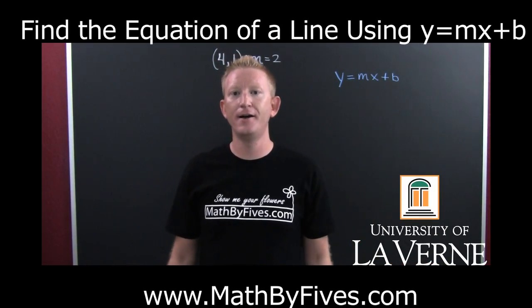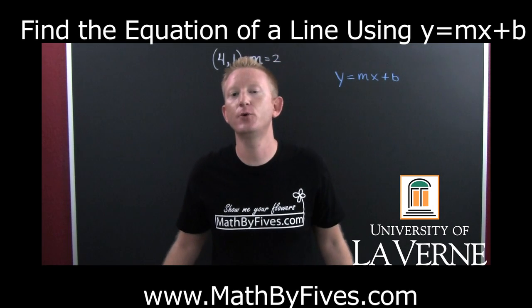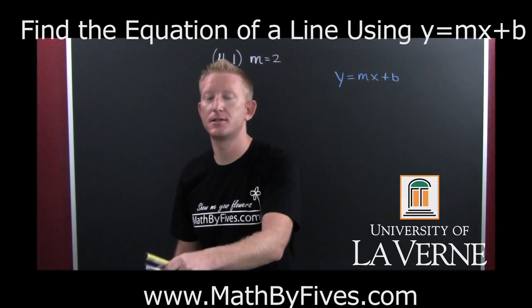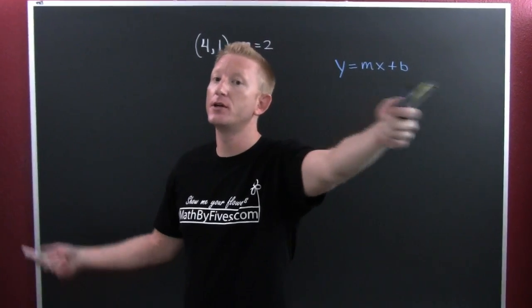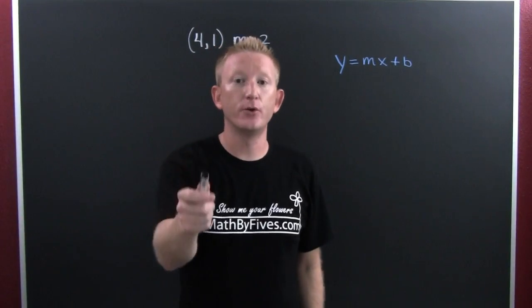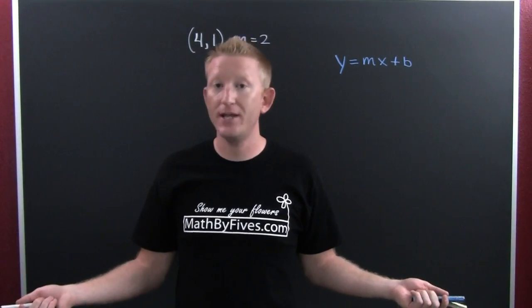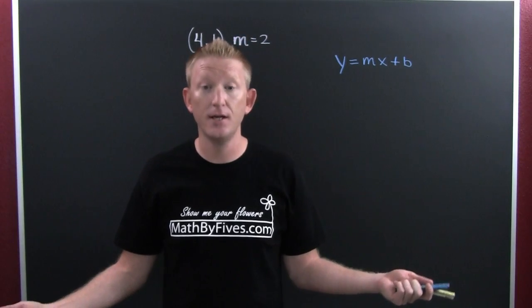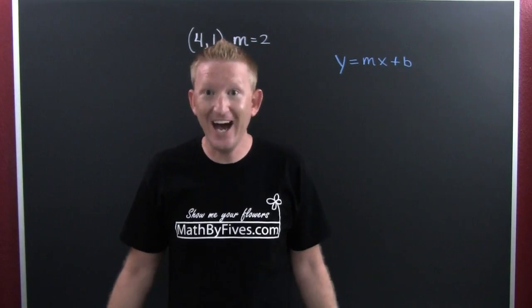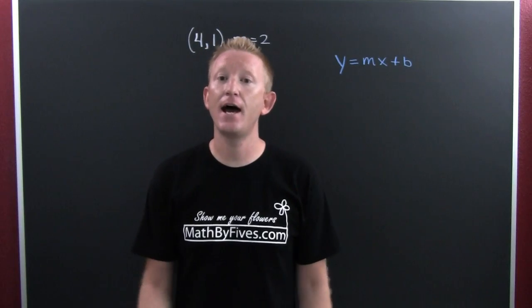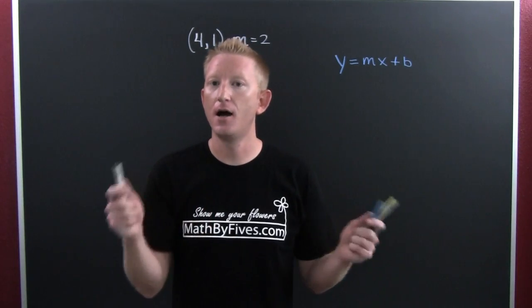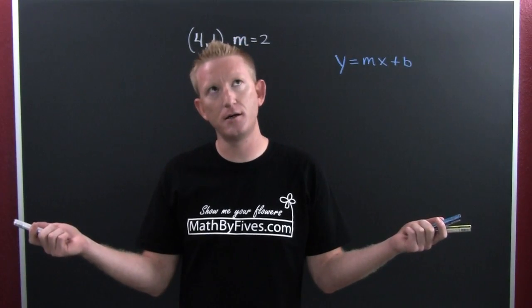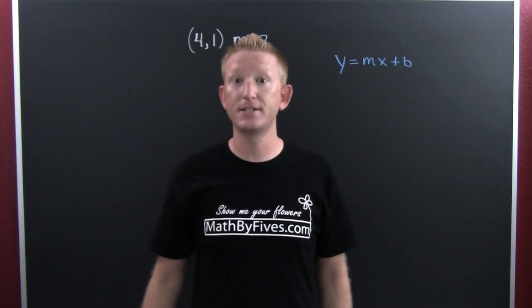Last time we were talking about finding the equation of a line with the y-intercept and a slope. This time we're going to go a little further and find the equation of a line with just a point and a slope. And I know what you're thinking — shouldn't I use point-slope? Yes, but this is what I like to call the backdoor method, because it's a trick using y equals mx plus b.